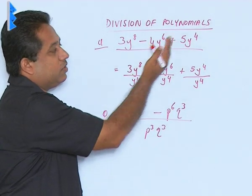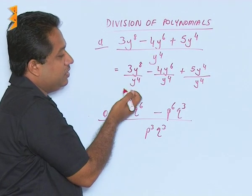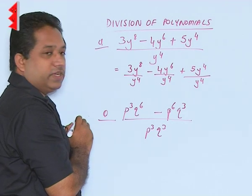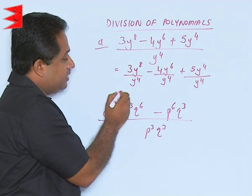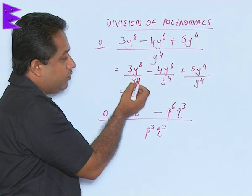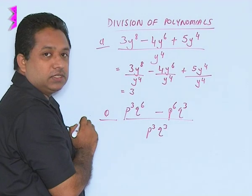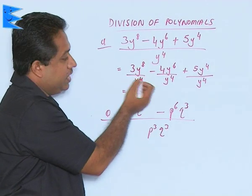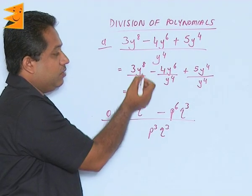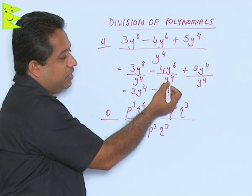We have separated out the terms, so all three terms in the numerator have the same denominator, that is y⁴. Now we will be using the laws of exponents. So 3 remains as it is, but this is y⁸ upon y⁴ — the base is the same and it is division, so we are going to subtract the powers: 8 minus 4, we get y⁴.